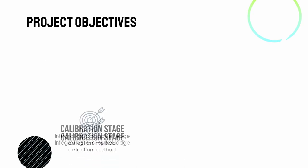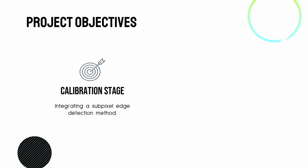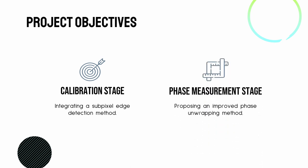The aim of this project is to improve the calibration stage by integrating a subpixel edge detection method and the phase measurement stage by proposing an improved phase unwrapping method in the Fringe Projection Profilometry FPP system. The goal is to design a higher accuracy and efficiency FPP system. This project will help to advance further studies in achieving a better real-time 3D data acquisition system.